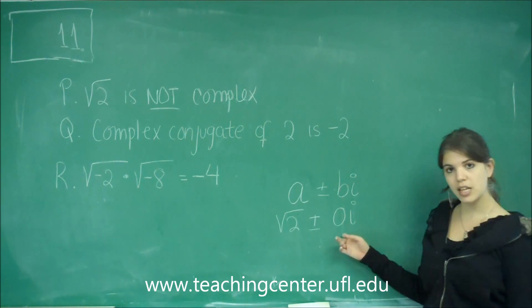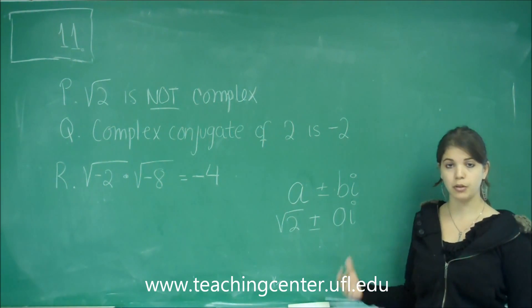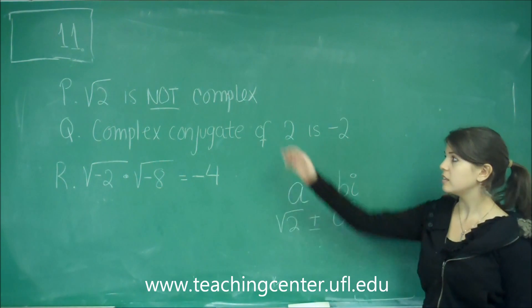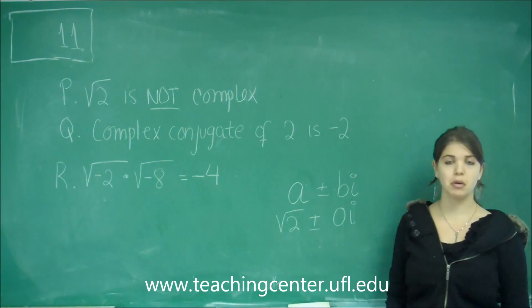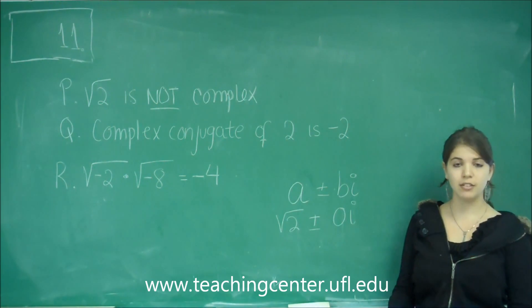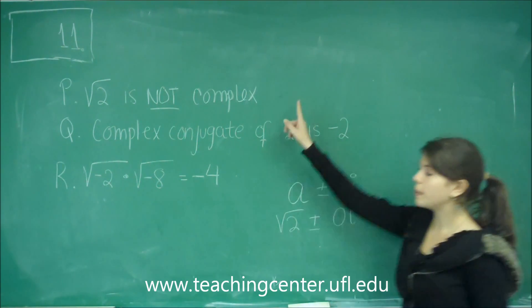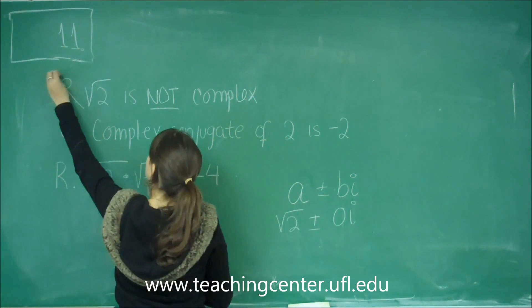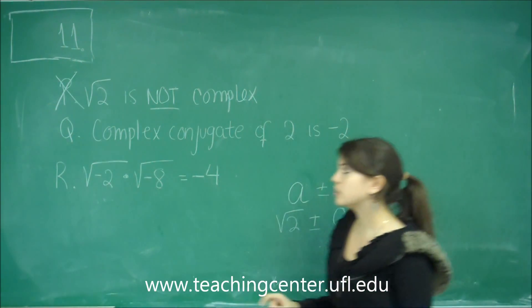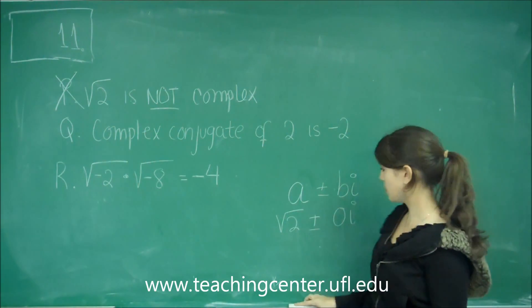It does have an I part, but it's become 0. So, technically, this actually is a complex number. Square root of 2 is a complex number. Every number is a complex number. So, part choice P is not correct, because square root of 2 is a complex number.